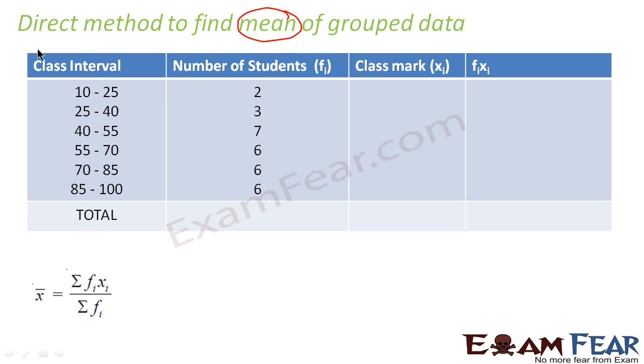The first method we are talking about is the direct method. In the direct method, what we do is we just find the xi. Since I have told that it is assumed that the frequency revolves around the middle of this value, correct, middle of the class interval. So we'll find the middle of this value, that is 10 plus 25 by 2, that becomes xi.